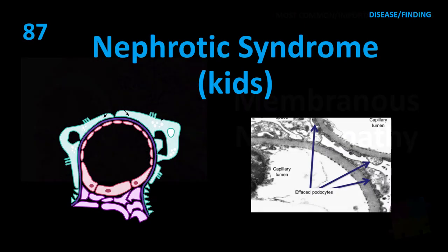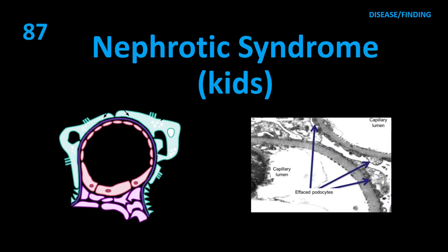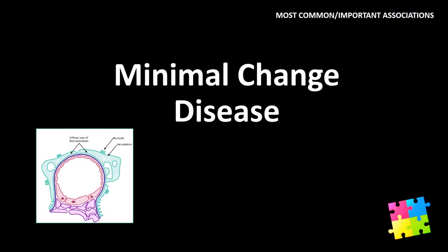Item 87: Nephrotic syndrome in kids — minimal change disease.